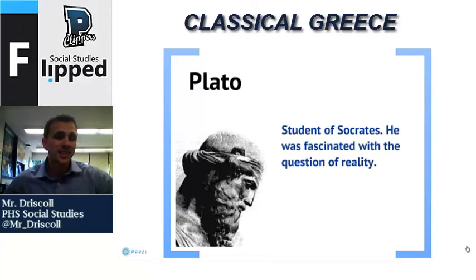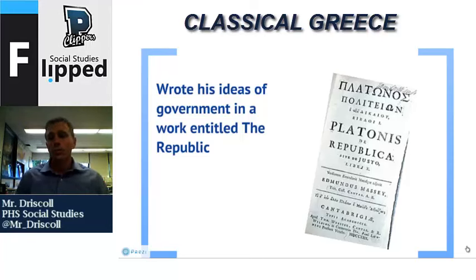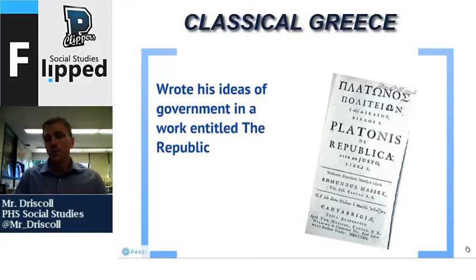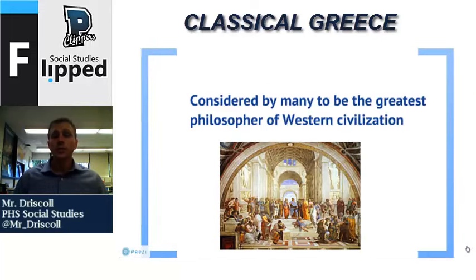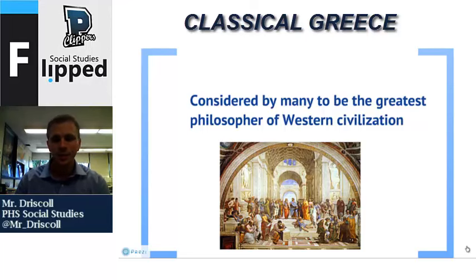Plato was a student of Socrates and was fascinated with the question of reality. He wrote about government in his work titled The Republic, and was actually very skeptical and distrustful of democracies. He thought society should be set up in three groups: philosopher kings, warriors to establish order, and then the masses. If everyone functioned as they were supposed to and followed their roles without abusing their powers, there would be a smooth functioning society. He was considered by many to be the greatest philosopher of Western civilization and set up what's called the School of Athens — as shown in a painting by Raphael, depicting many philosophers of the time and even the Renaissance all together.